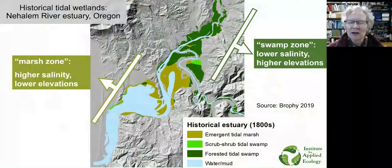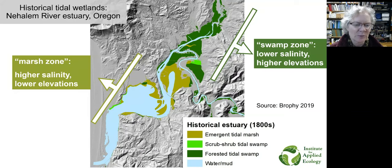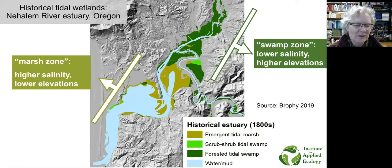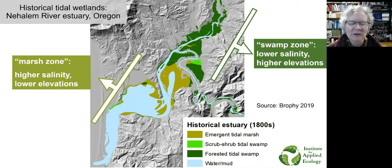This map shows how these tidal wetland types have been distributed historically in our estuaries. This is the historical distribution from the 1800s of tidal marsh and tidal swamp in the Nehalem River estuary of Oregon. Here in the lower estuary, you can see the bay and the tidal river exiting to the ocean. The marsh zone is found in the lower estuary with higher salinities and lower elevations, but tidal swamps are found throughout — in fringing areas and particularly upstream, where salinities are generally lower and elevations are generally higher.